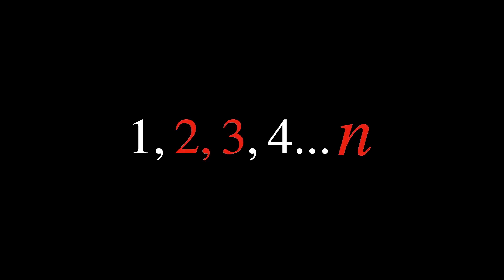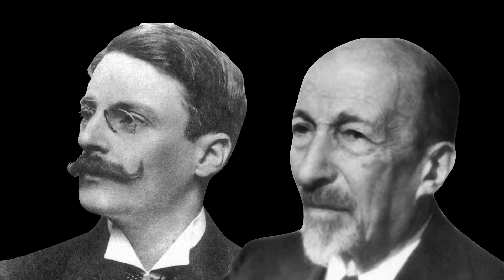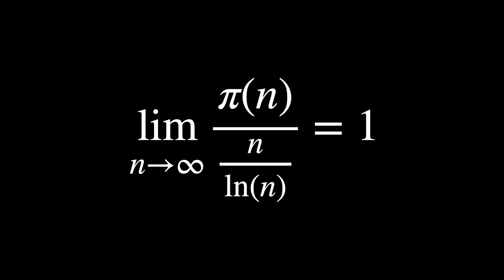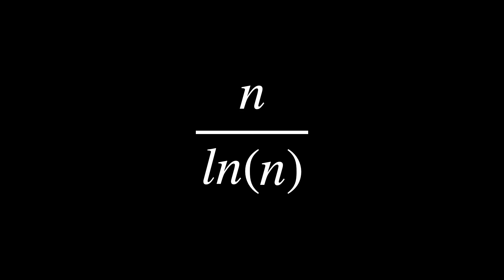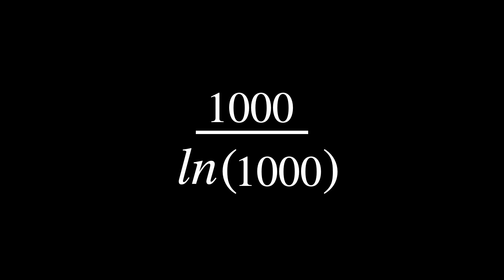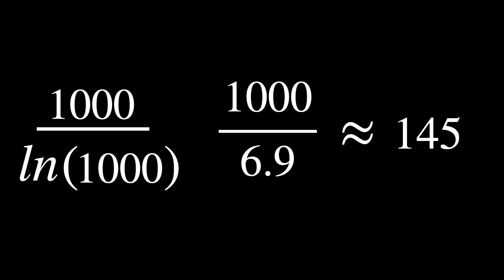The prime theorem attempts to answer the question: given a positive integer n, how many integers up to and including n are prime numbers? This was first raised by Gauss, and later confirmed by mathematicians Jacques Hadamard and Charles-Jean de la Vallée Poussin. For example, let's take the number 1,000. If we plug it in, we have 1,000 over the natural logarithm of 1,000, which is around 1,000 over 6.9, which is approximated as 145.